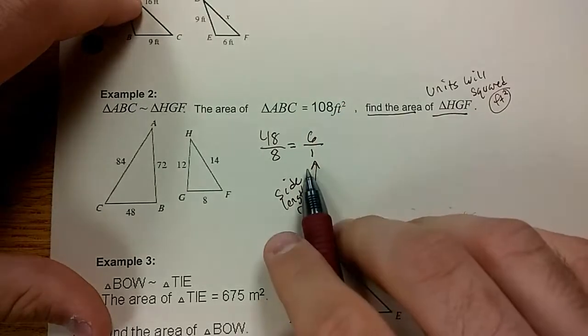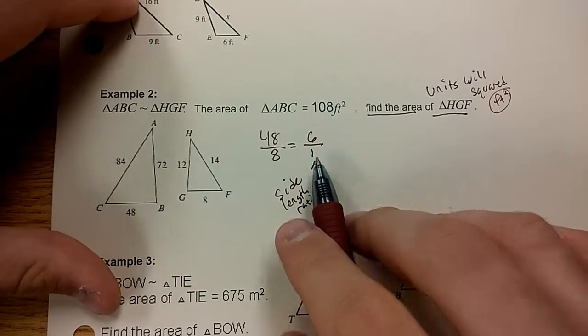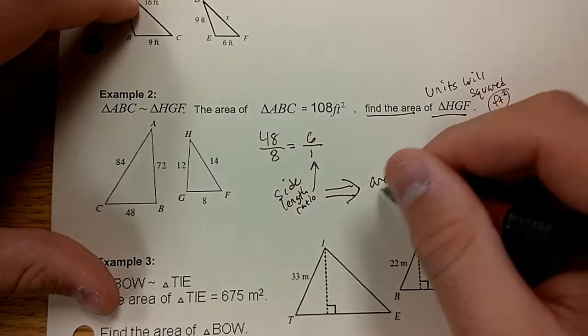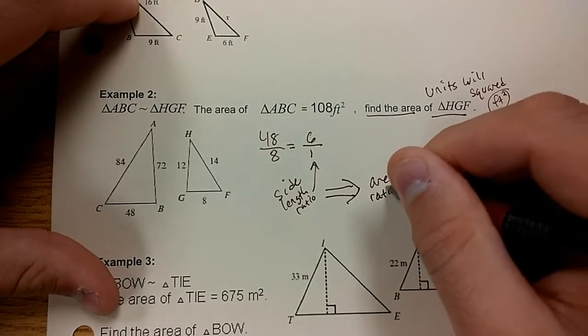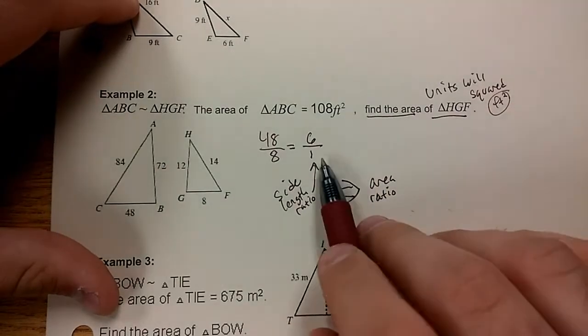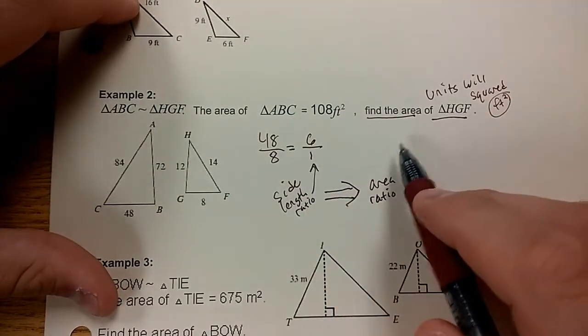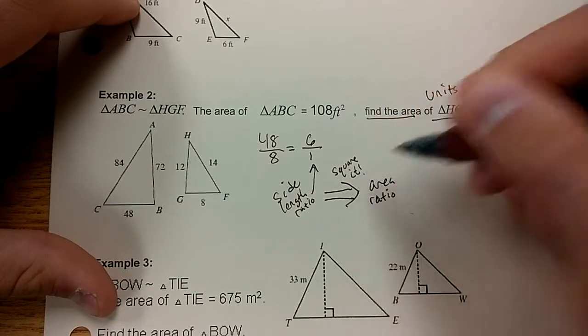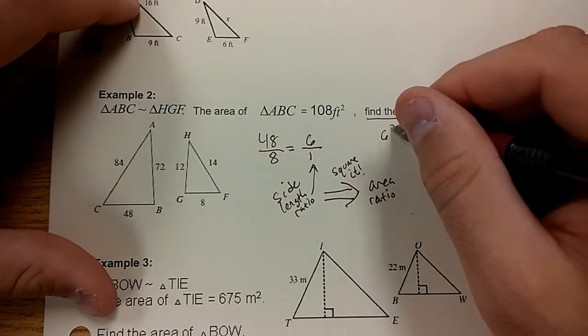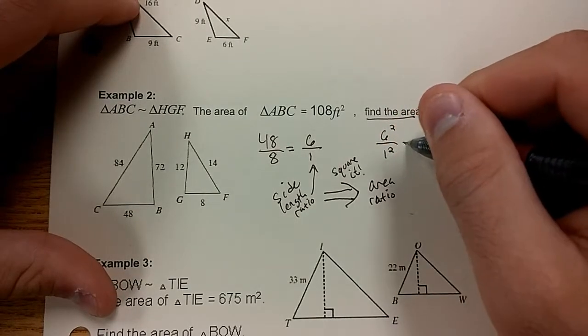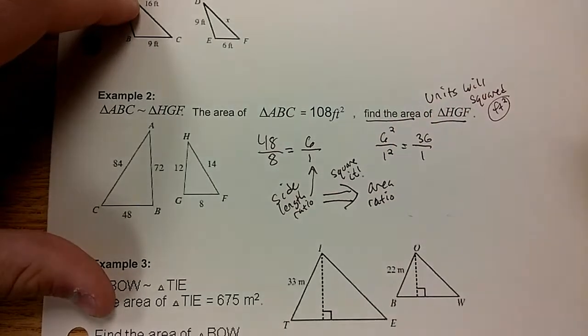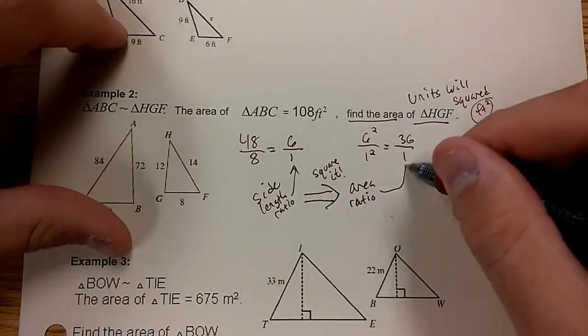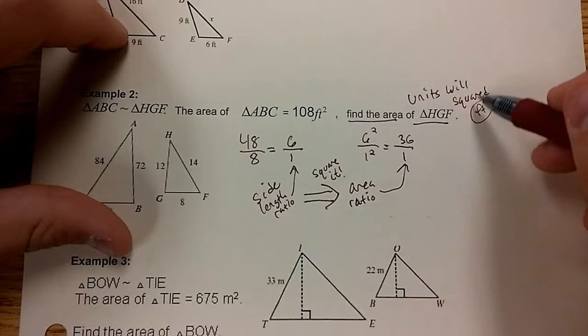You can't use this one to find areas because it's not an area ratio. But you can take this and change it into an area ratio by using the rule I stated in the beginning of the video. To go from a side length ratio to an area ratio, you're going to square it. You're going to square 6, and you're going to square 1, and you get 36 over 1. That is your area ratio.